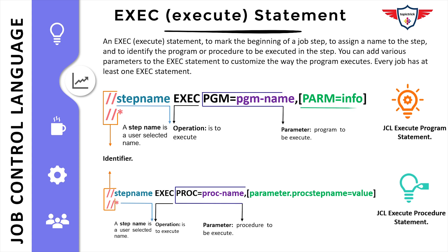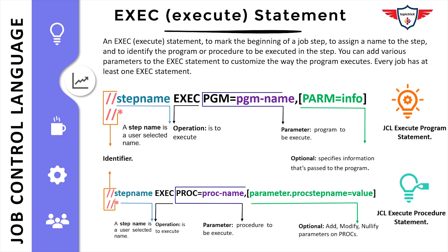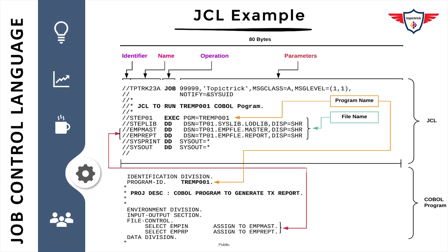The parameters highlighted in green are optional. If you are running a COBOL program and want to pass additional information, you can use PARM= followed by that information. If using a proc, you can use the proc-overriding technique to add, modify, or nullify parameters used in cataloged or in-stream procedures. To override a parameter, specify the parameter followed by a dot, then the proc step name where that parameter is used, and then the value you want to pass.